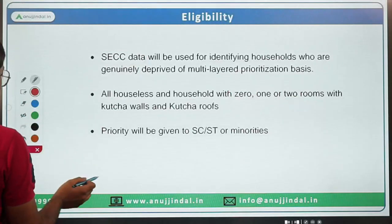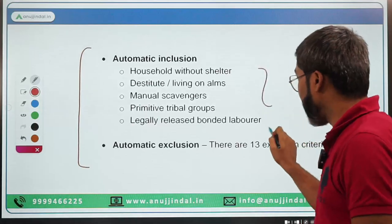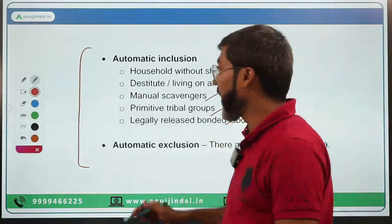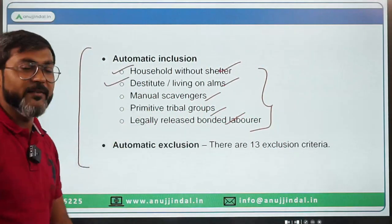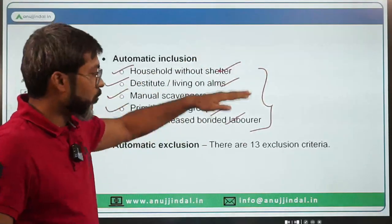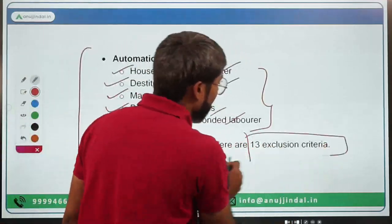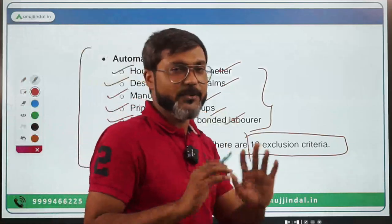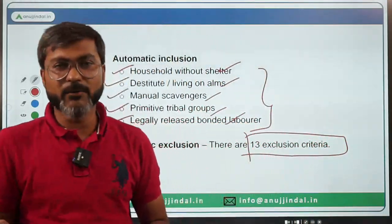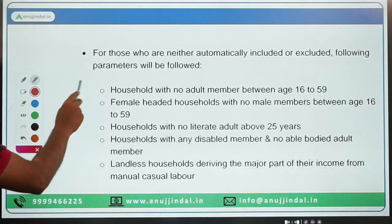Priority is given to SC/ST and minority communities. There are five automatic inclusion criteria — any household falling within these is eligible: (1) household without shelter, (2) destitute or living on alms, (3) manual scavengers, (4) primitive tribal groups, and (5) legally released bonded laborers. There are also 13 automatic exclusion criteria.